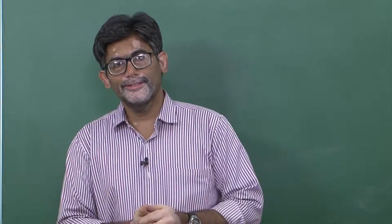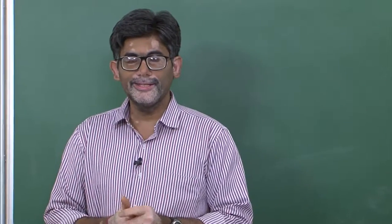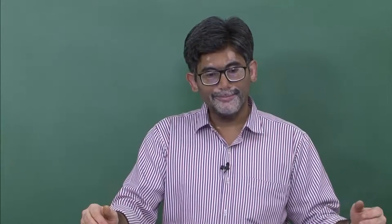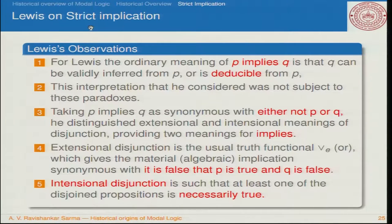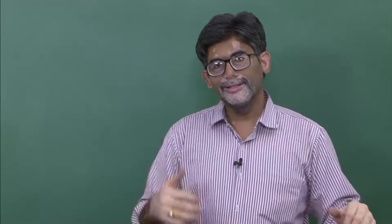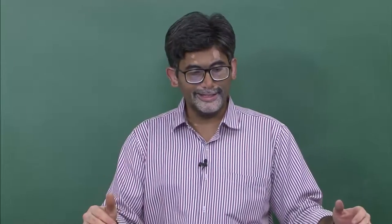Welcome back. In the last lecture, we discussed a little bit about strict implication and how modal logic emerged with thorough dissatisfaction with respect to material implication. When it comes to material implication, we have two issues. The first issue is that a true proposition is implied by any strange kind of proposition, and a false proposition implies anything. Lewis came up with another type of implication which he calls strict implication. Some things were discussed already in the last class, but we will be continuing with what we have seen.